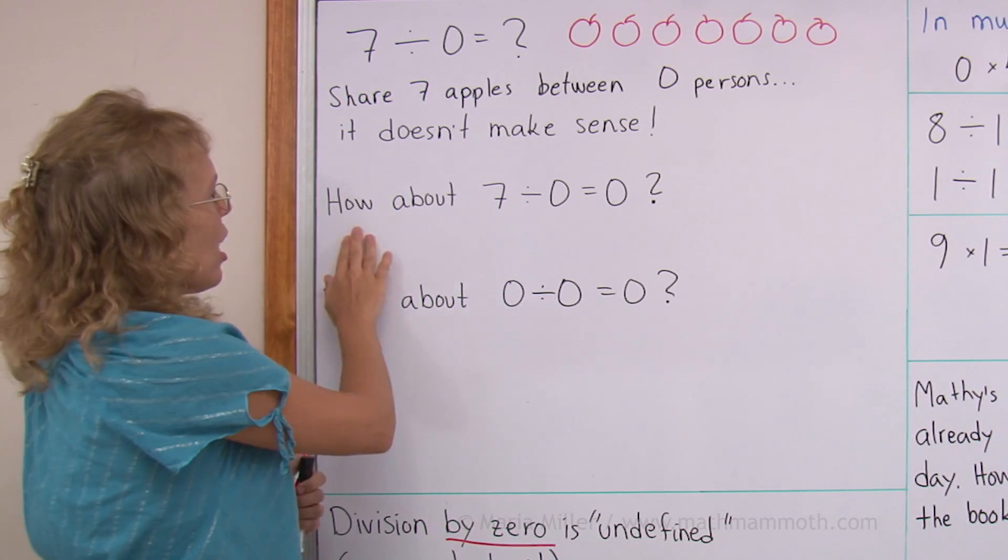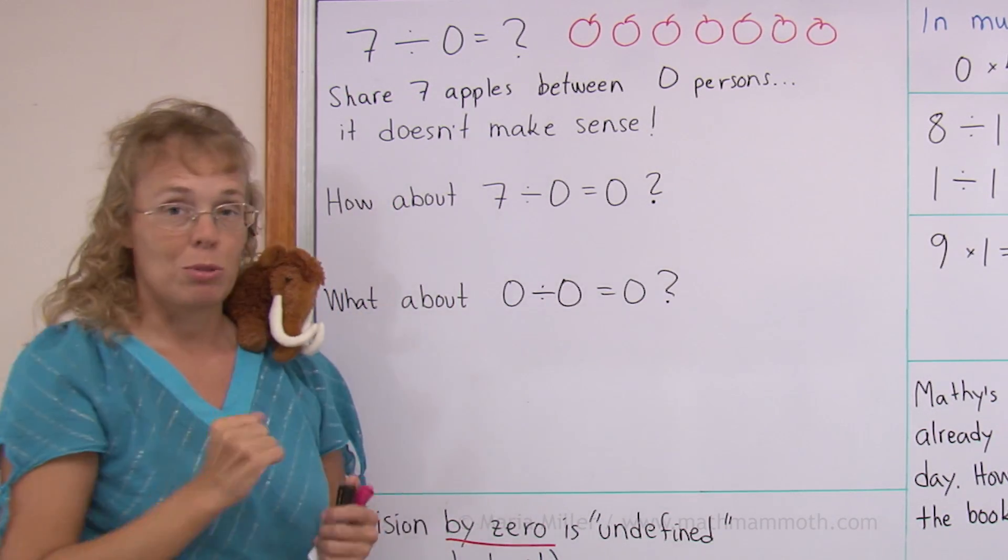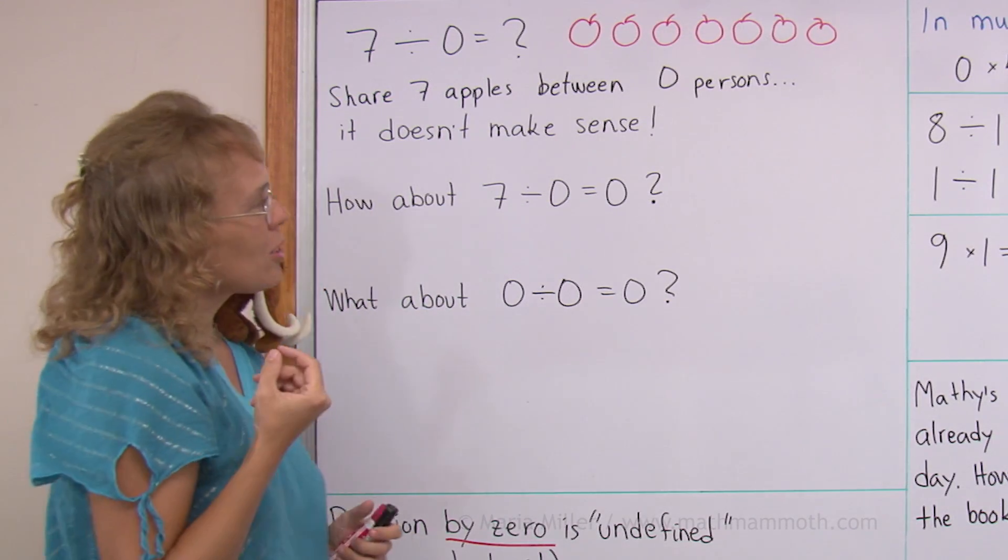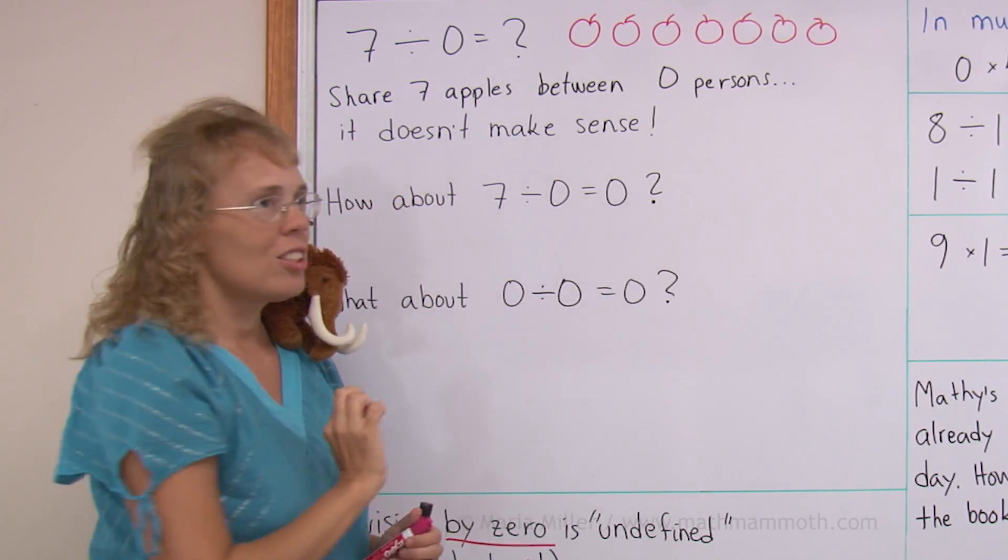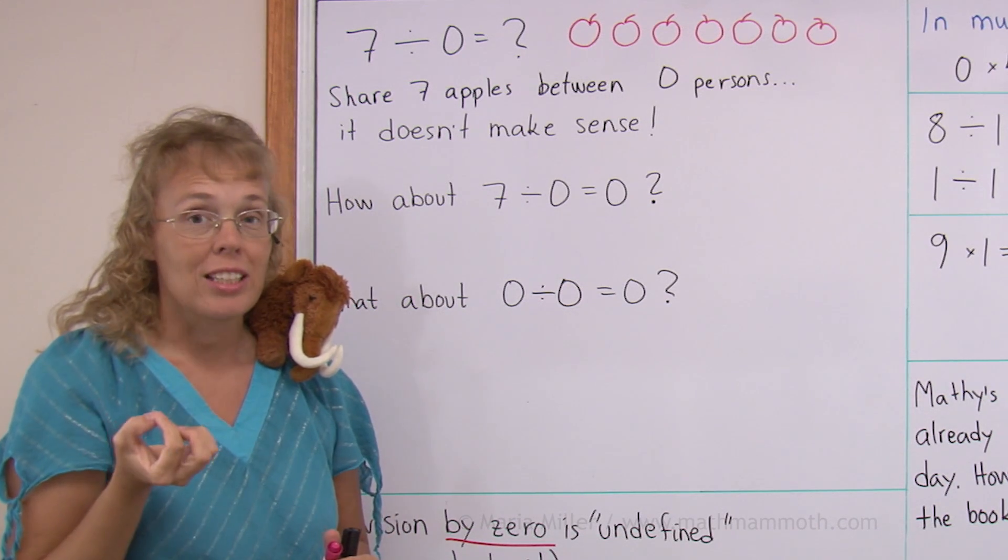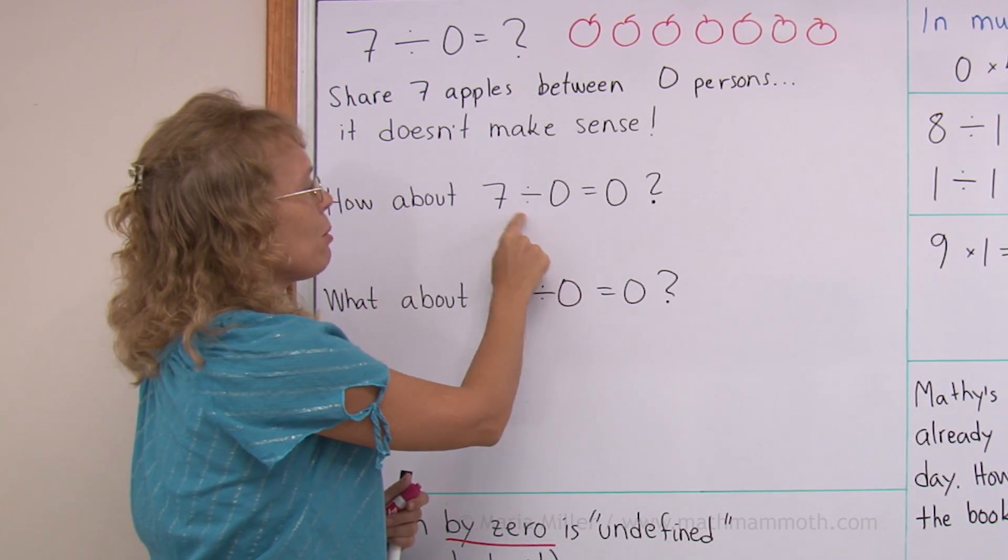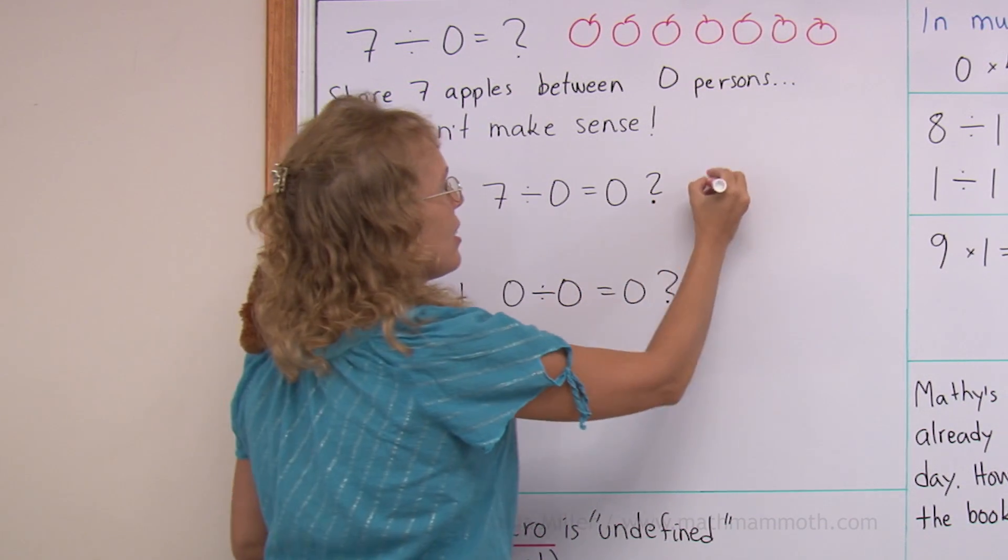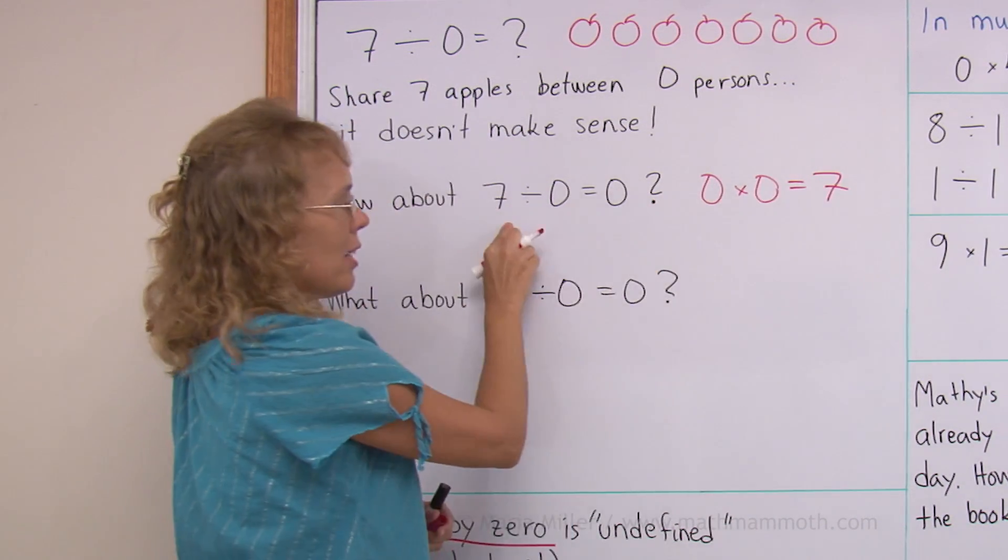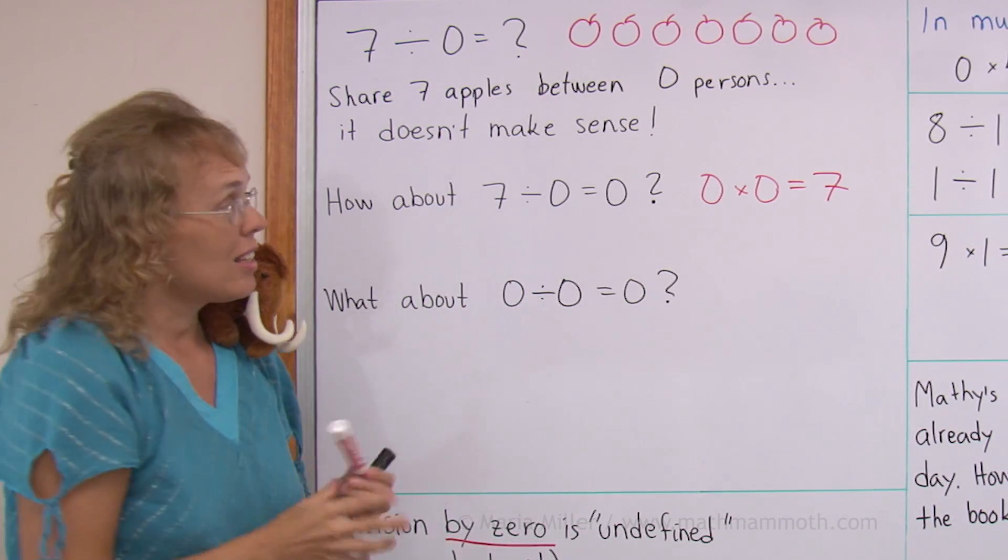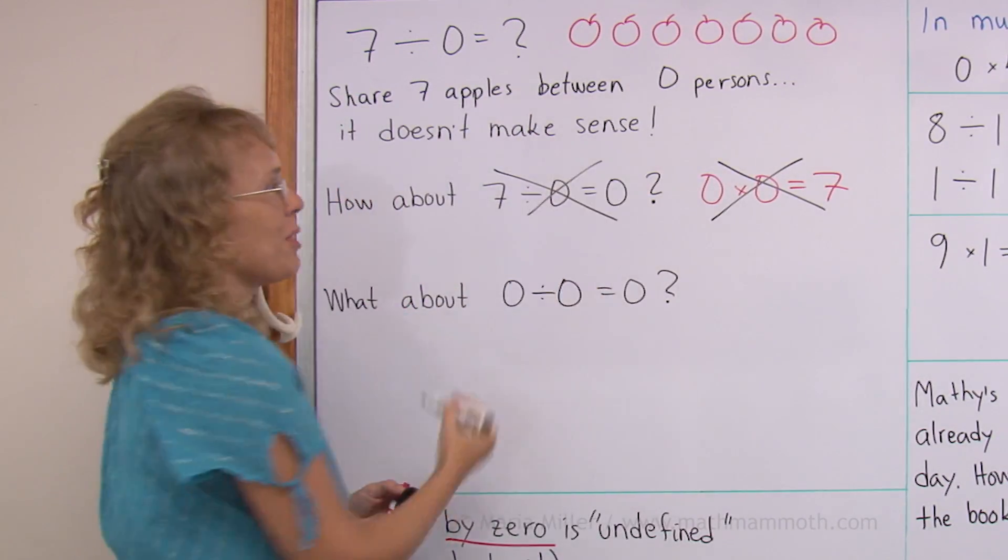Well, somebody might say, how about if we say that seven divided by zero equals zero? Wouldn't that work? There's another problem. And that is that each division is supposed to be able to check it by multiplying. This times this is supposed to equal this. But we would get zero times zero equals seven if we do that, right? That doesn't work. So this doesn't work either.